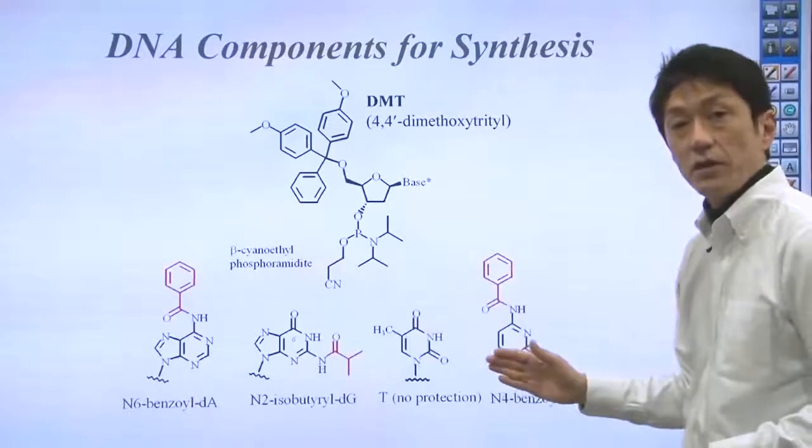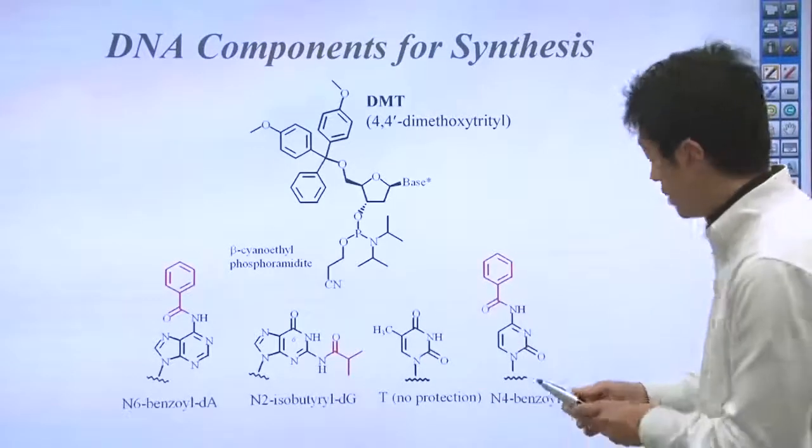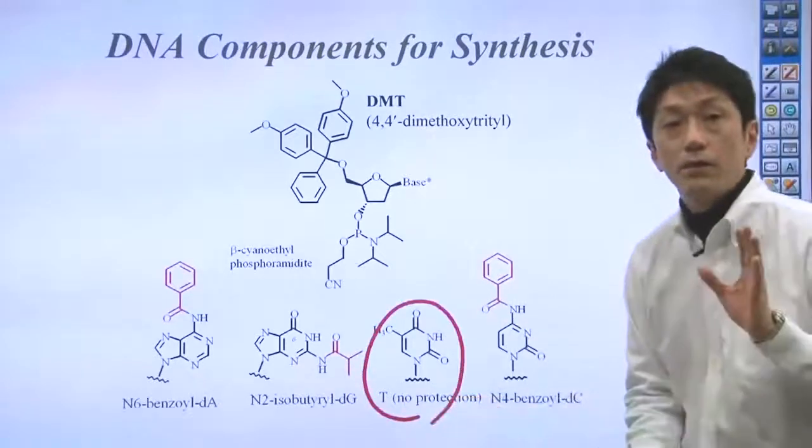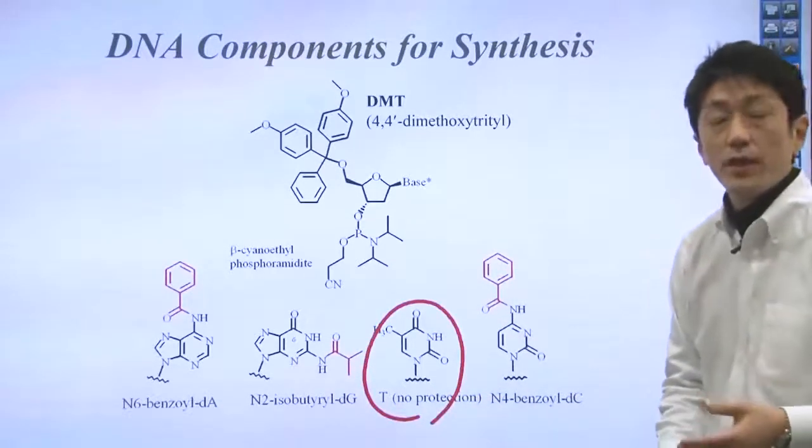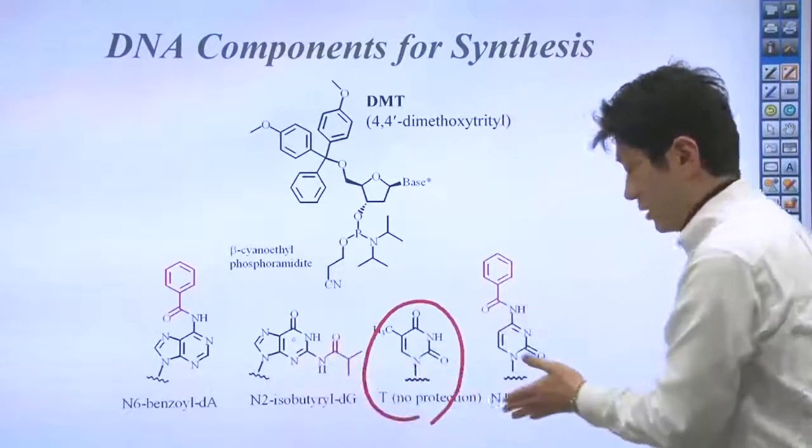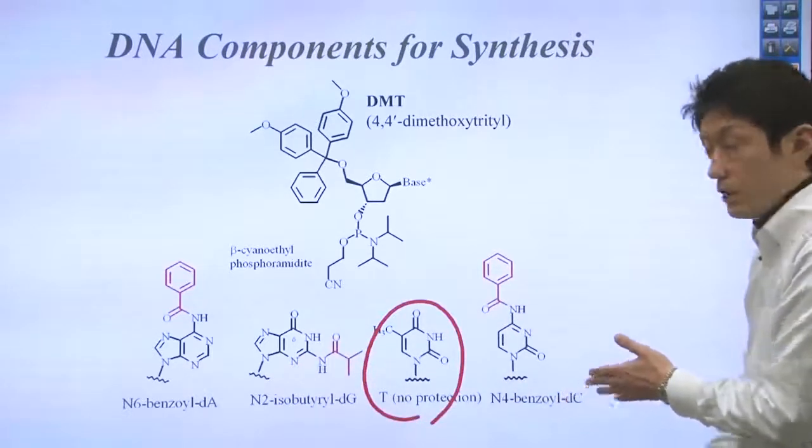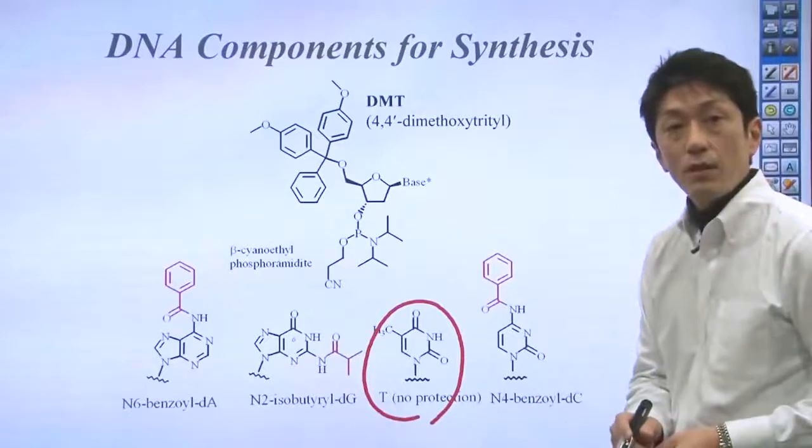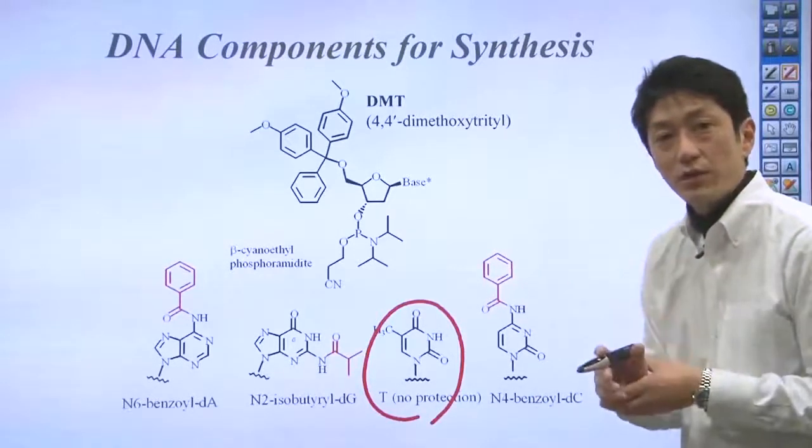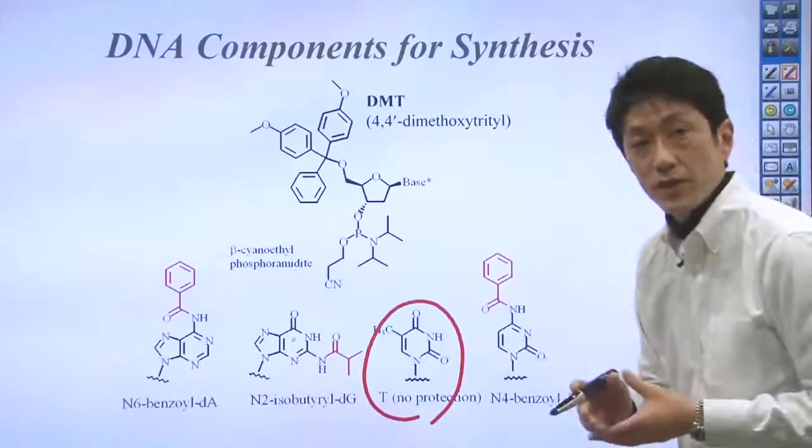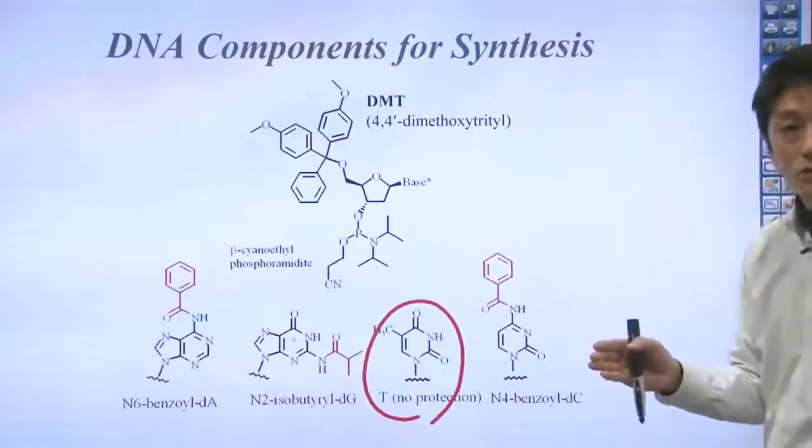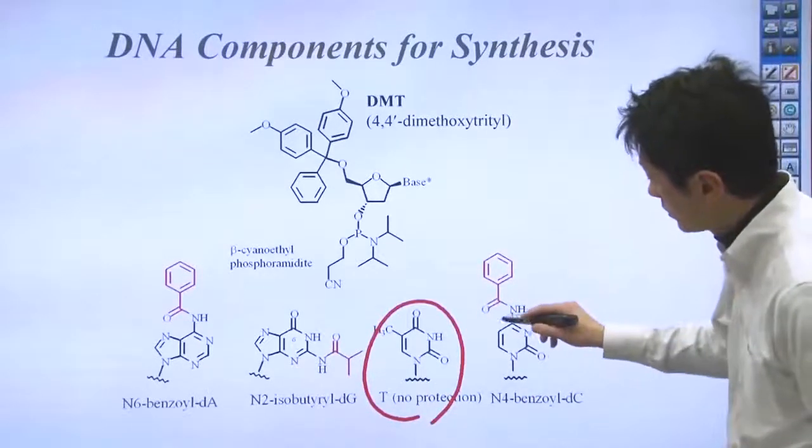So looking at bases here, T is identical to that in natural DNA. However, the other bases, A, G, C, are different. There are amino groups who trigger an unnecessary reaction in the chemical synthesis process. And therefore, these amino groups are protected so that they do not react. These are all protected.